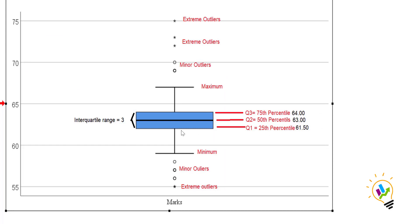Looking at the box plot, we can see the first quartile at the 25th percentile is 61.5, the second quartile at the 50th percentile is 63, and the third quartile range is also visible. The minimum and maximum scores are shown, and the difference between the first and third quartile is the interquartile range.